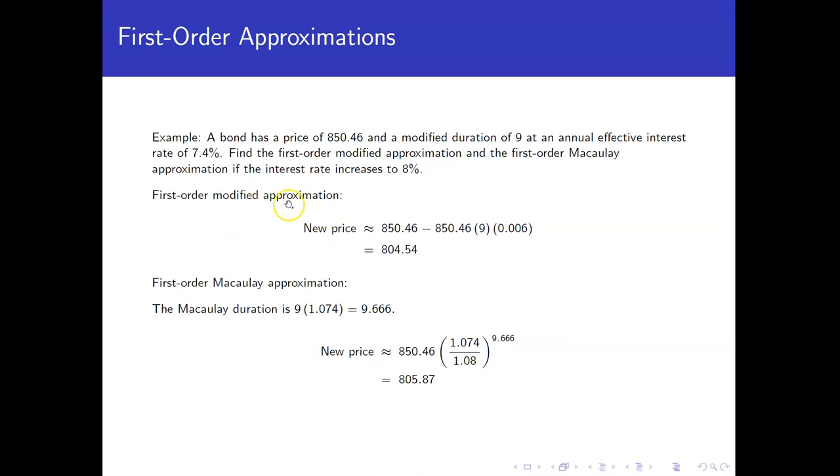All right, so for our first order modified approximation, we're going to take the old price and subtract off the old price times the modified duration times the change in the interest rate, which in this case would be 0.006 because we went up 6 tenths of a percent, which gives us a new price of $804.54.